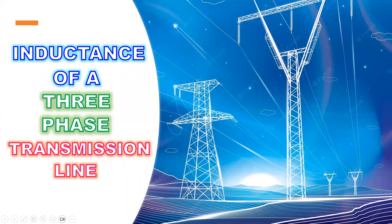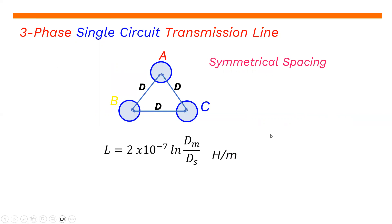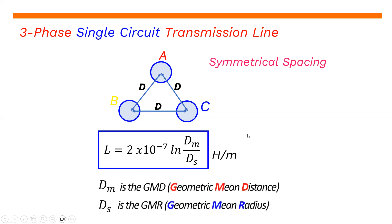Today we're going to talk about the inductance of a three-phase transmission line. We have here a three-phase single-circuit transmission line with symmetrical spacing. The inductance can be expressed as L = 2 × 10⁻⁷ × ln(D_M / D_S) Henry per meter, where D_M is the geometric mean distance (GMD) and D_S is the geometric mean radius (GMR).